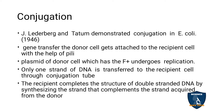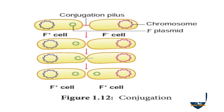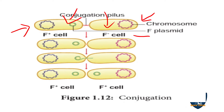Now I will explain with the help of a diagram. If a bacterium contains a plasmid — a plasmid is an extra-chromosomal element — then that is called the fertility factor, and it is an F plus cell, the donor cell. If the bacterium does not have the plasmid, it is called an F minus cell.